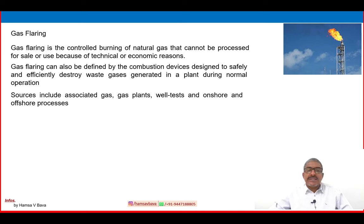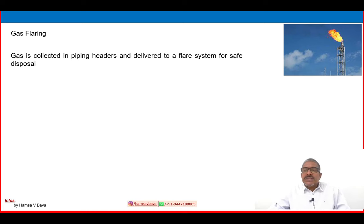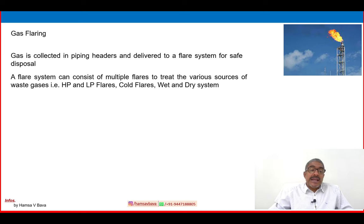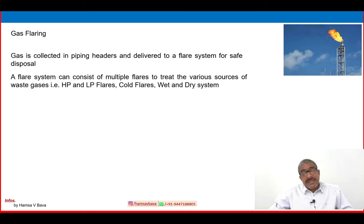Sources include associated gas, gas plant, well test, and onshore and offshore processes. Gas is collected in piping headers and delivered to a flare system for safe disposal. A flare system can consist of multiple flares to treat the various sources of waste gases — for example, HP gas will be treated through an HP flare system, LP gas through an LP flare system, or a cold flare system, wet and dry systems.